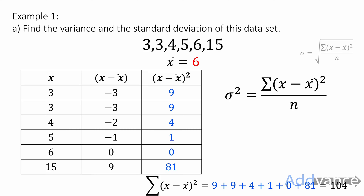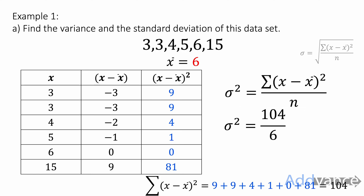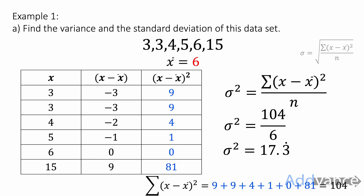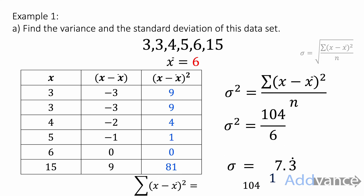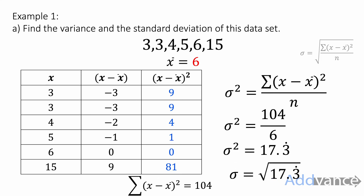We are really close now. To work out the variance, we take the sum of all (x minus the mean) squared divided by the number of values. The numerator is 104, and the number of values in our data set is 6. So 104 divided by 6 is 17.3 recurring — that's the variance. If you wanted the standard deviation, we just square root that, and the square root of 17.3 recurring is 4.163.